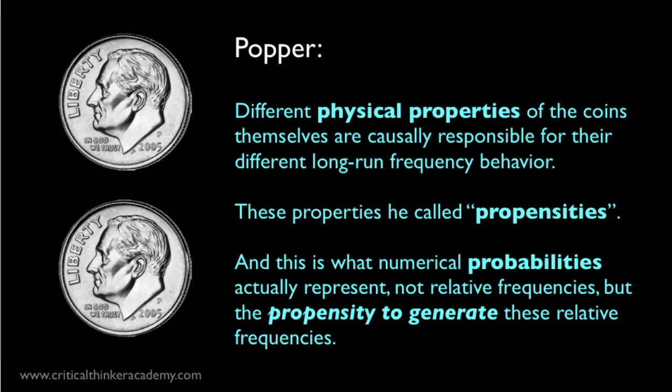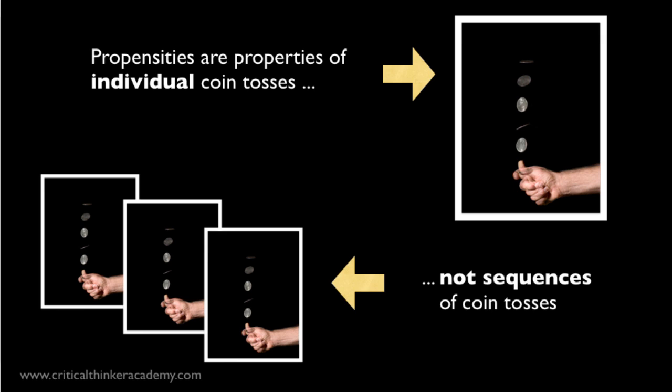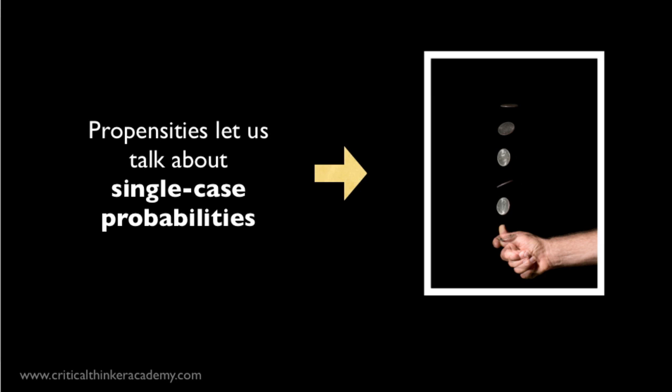And this is what numerical probabilities are taken to represent: propensities of an experimental setup to generate these different relative frequencies of outcomes. Now, an important feature of these propensities is that they belong to individual coin tosses, not to sequences of coin tosses. Propensities are supposed to be causally responsible for the patterns you see in sequences of coin tosses, but the propensities themselves are properties of individual coin tosses. So on a propensity interpretation, if you toss both of these coins just once, you can say of this singular event that the unbiased coin has a probability of 0.5 of landing heads, and the biased coin has a probability of 0.75 of landing heads. Popper and other propensity theorists take it as a major advantage of this approach that it lets us talk about single-case probabilities. And it has a theoretical advantage in that it explains the long-run frequency behavior of chance setups, rather than just treat them as brute empirical facts, as frequency approaches tend to.